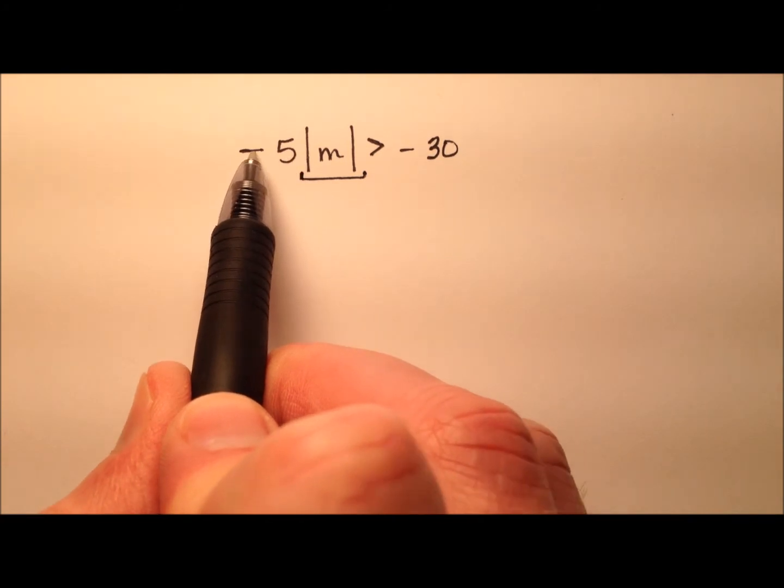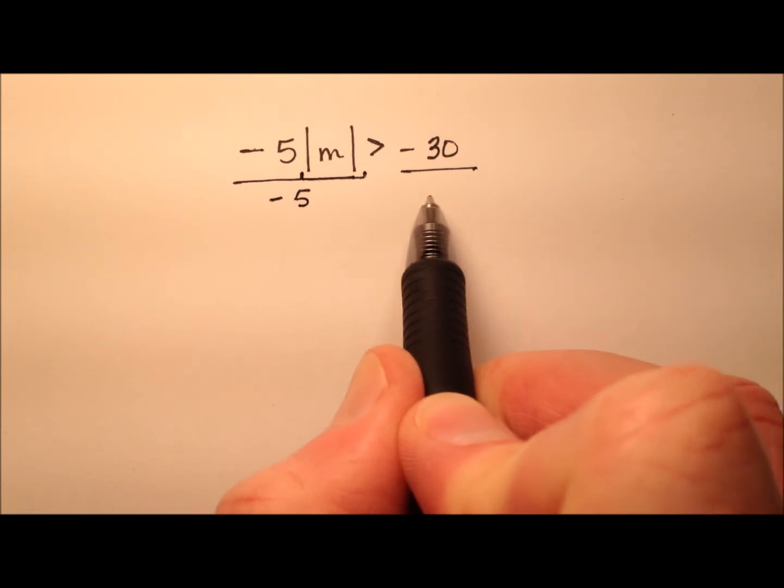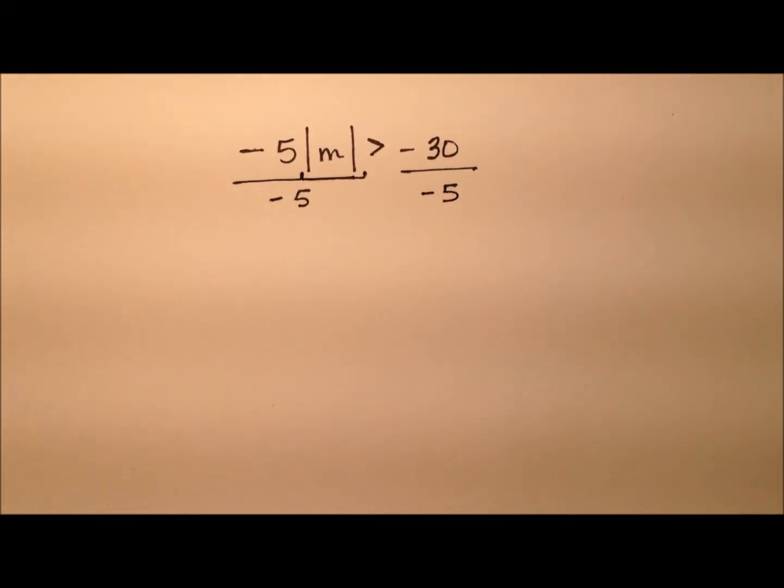Right now it's being multiplied by negative 5 on this left side. So I'm going to go ahead and divide both sides of this inequality by negative 5.